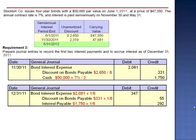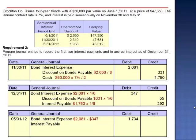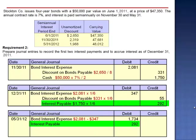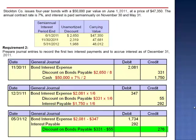Assuming no reversing entries are made, on May 31, 2012, we need the carrying value to be $48,012. We debit bond interest expense for the five remaining months, $2,081 minus the $347 that was already recorded for the first month ending December 31, which is $1,734. Debit interest payable for the amount previously accrued, $292. Credit discount on bonds payable for the remaining five months, $331 minus the $55 that has already been recorded for the one month ended December 31, giving us $276. And credit cash for the semiannual payment amount, $1,750.